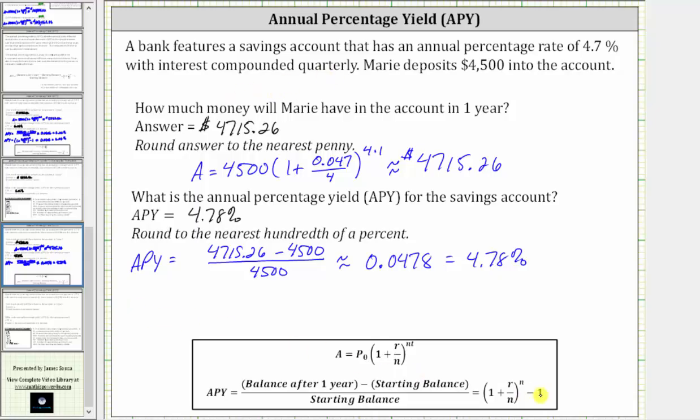Let's also find the APY using the second formula, where the APY equals the quantity one plus r divided by n, raised to the power of n, minus one. Of course, we should get the same result. The quantity one plus r divided by n gives us the annual interest rate as a decimal, which is 0.047 divided by four. This is raised to the power of four, and then minus one.